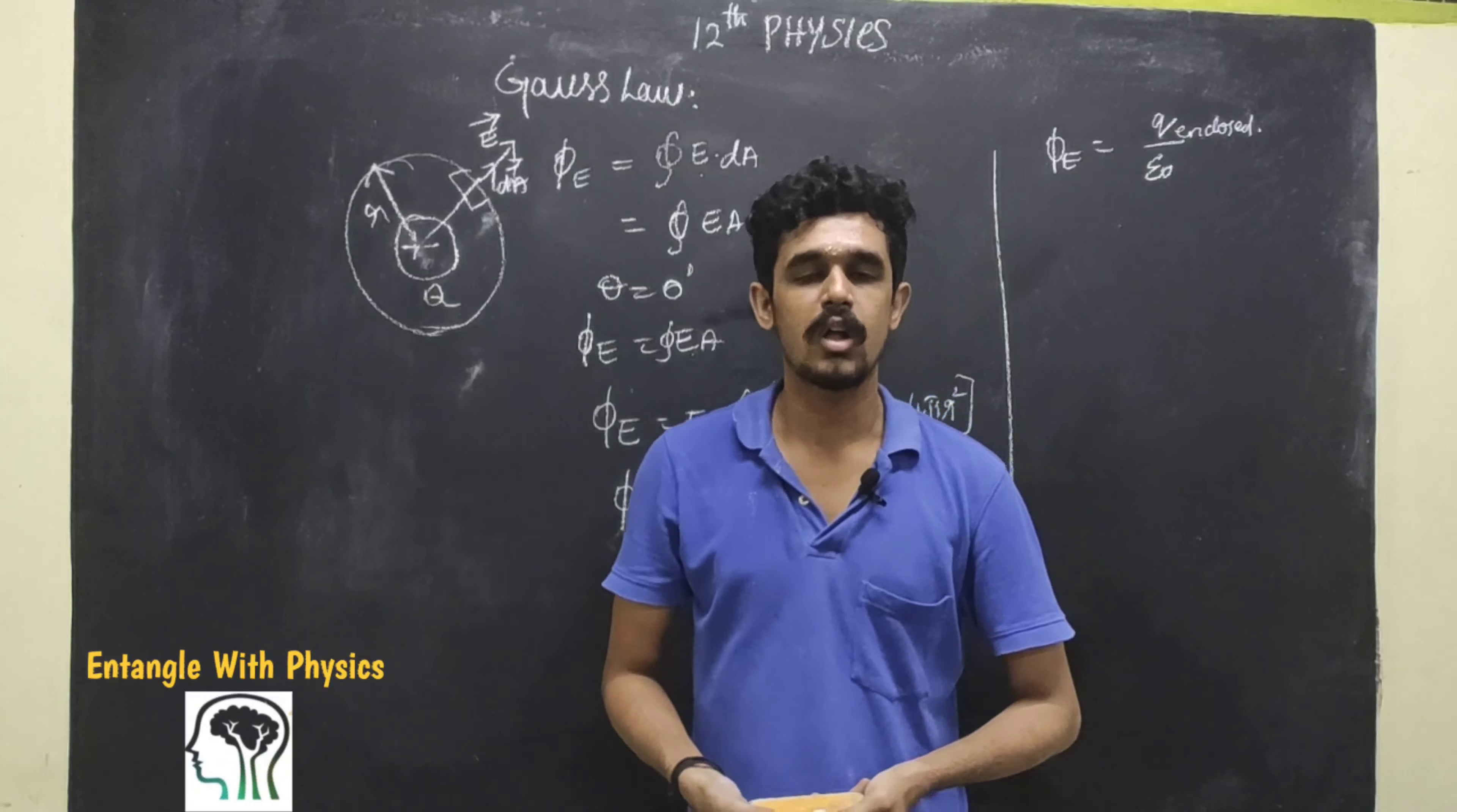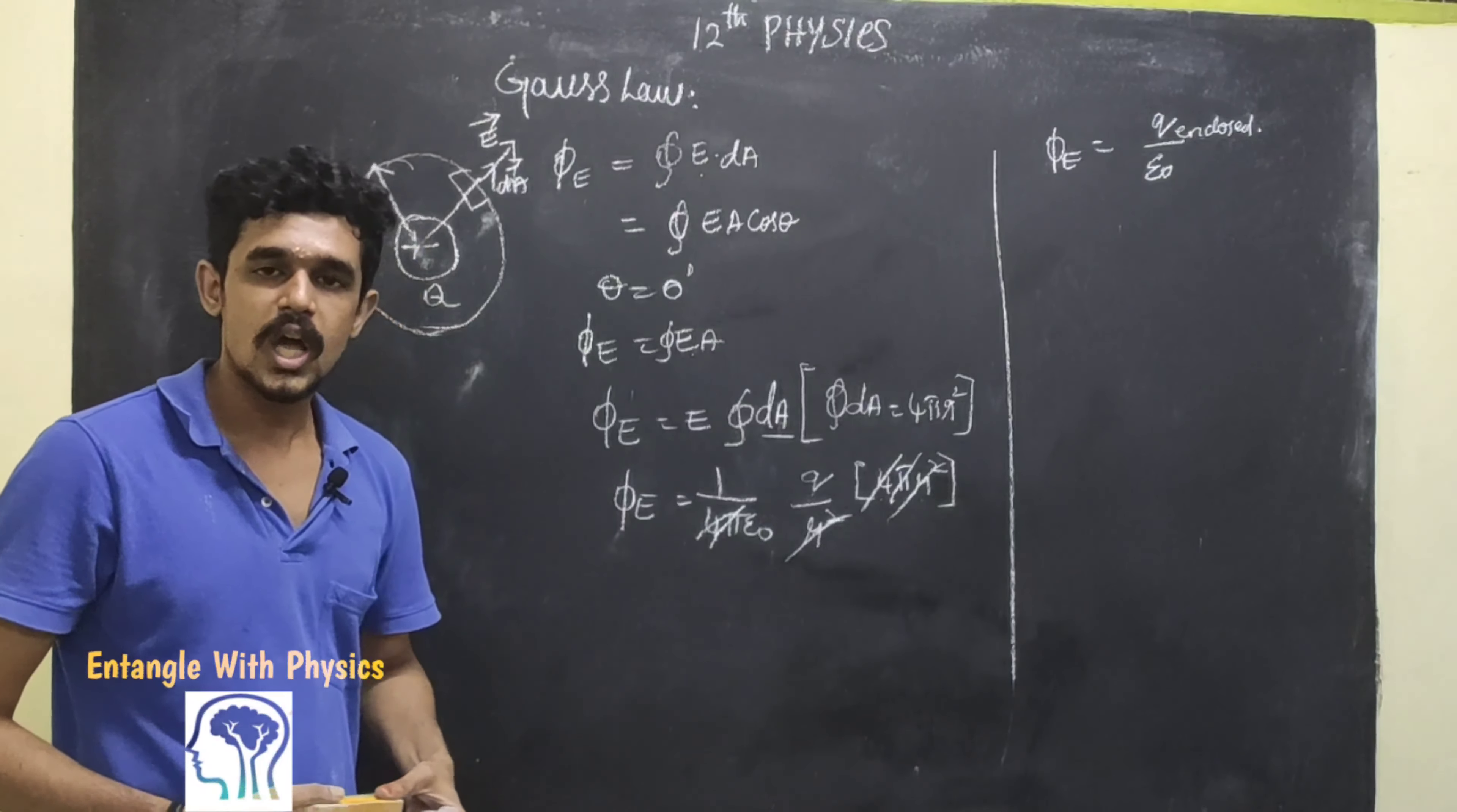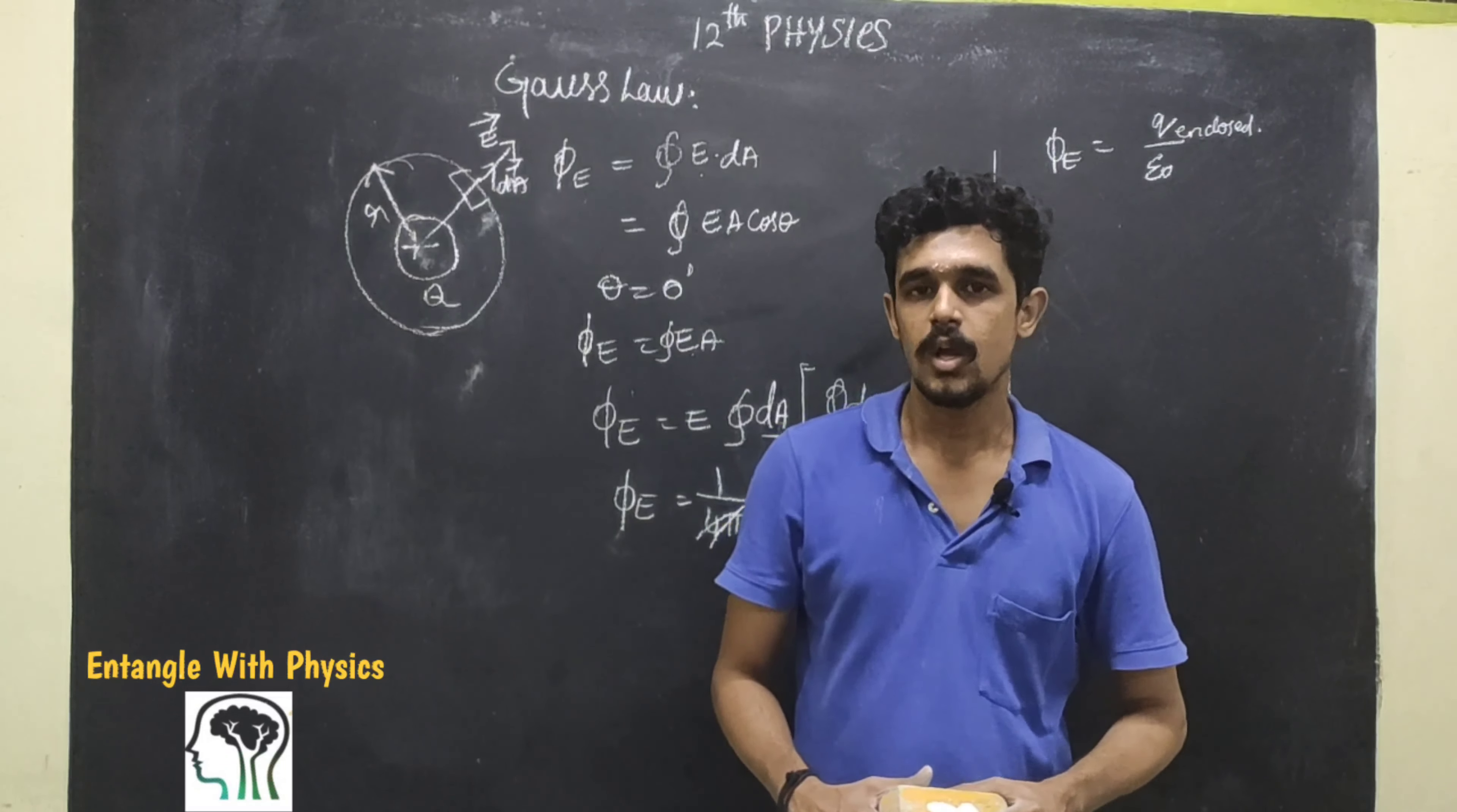In the Gaussian surface, this is very important. In the Gaussian surface, all the charge we can contribute, the outside charge we can contribute to the electric flux.